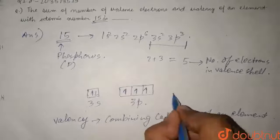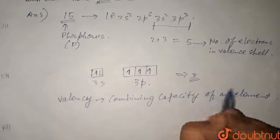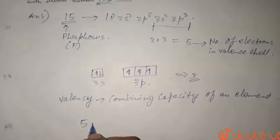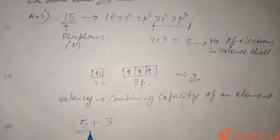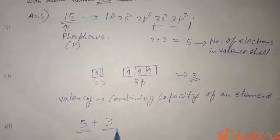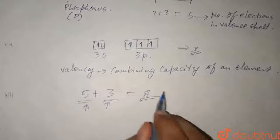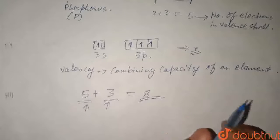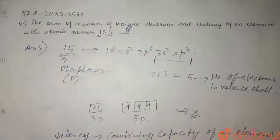So the combining capacity will be 3 in the ground state, meaning the valency is 3. We are asked for the sum of valence electrons and valency. The number of valence electrons is 5 and valency is 3 for the element with atomic number 15. So, 5 plus 3 equals 8. Therefore, our answer is 8. Thank you.